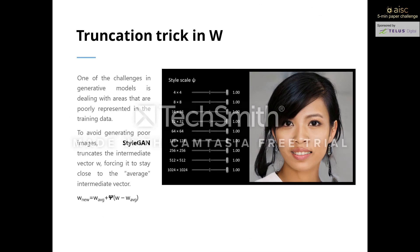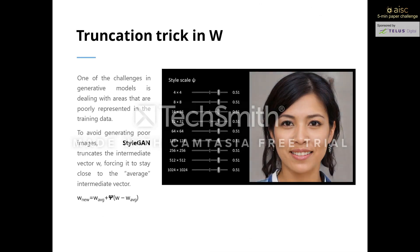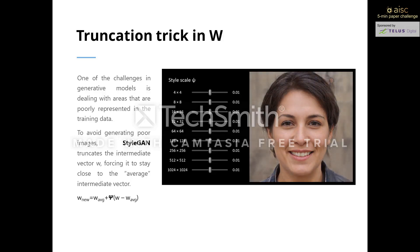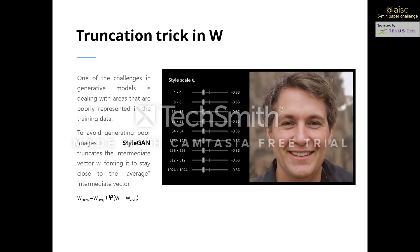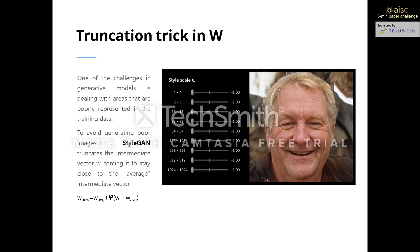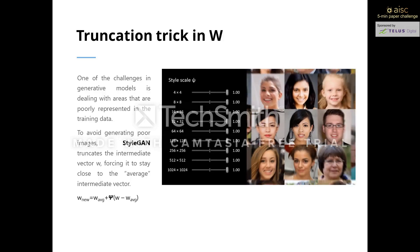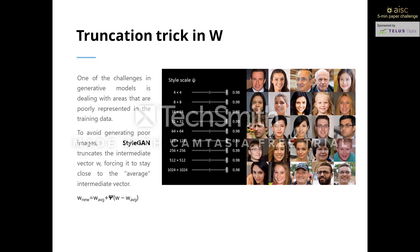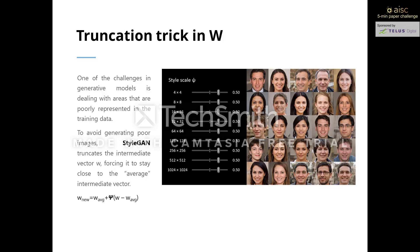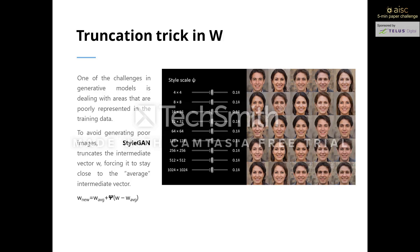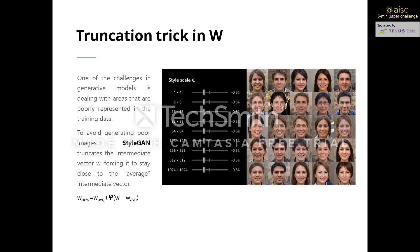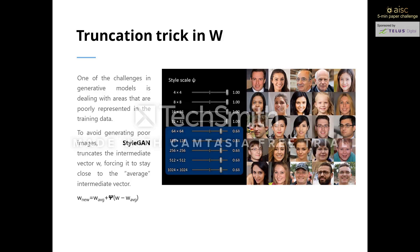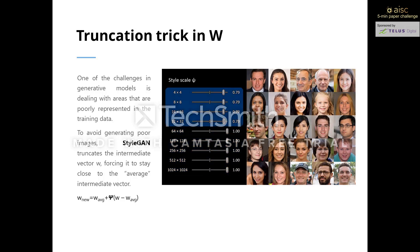One of the challenges in this model is dealing with areas that are poorly represented in the training data, because the generator is not able to learn them and create images that resemble them. To avoid generating poor images, StyleGAN truncates the intermediate vector W by forcing it to stay close to the average intermediate vector, which is produced by selecting many random inputs. The mapping network transforms W in a way that the value of psi defines how far the image can be from the average image.